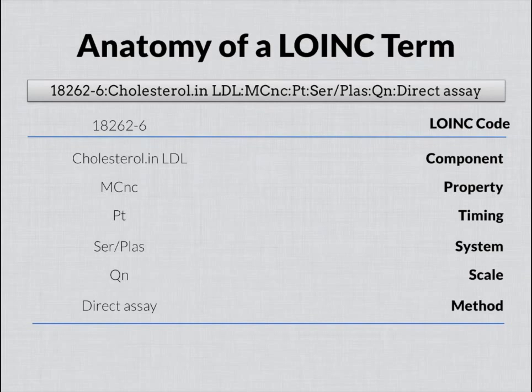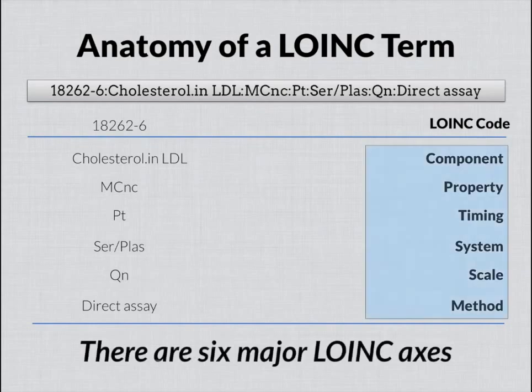The name is broken down into six major axes: the component, the property, timing, system, scale, and method. Of these six, the method is the only one that is optional, meaning it is not a required entry for creating the term or the term name itself. We'll get into methods and why we would add it in some cases and not others when we talk about the method axis. But there are six of them, and method is optional.